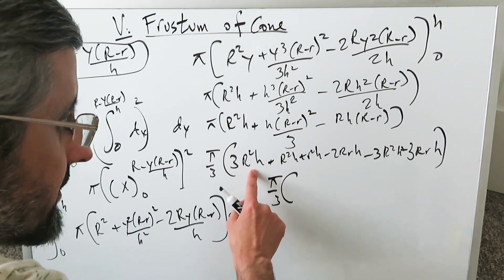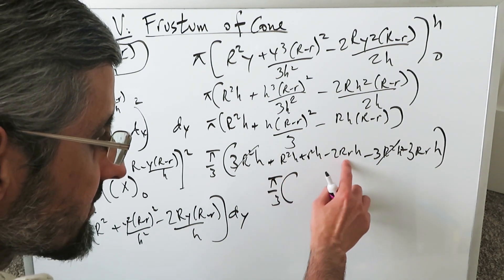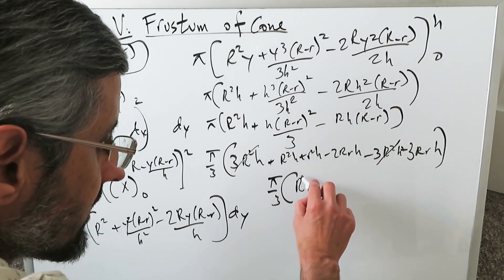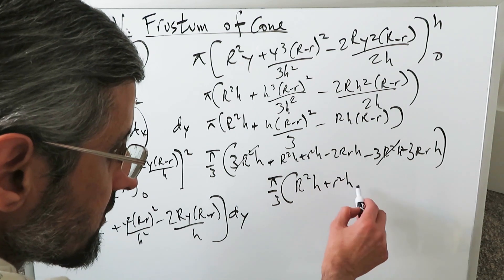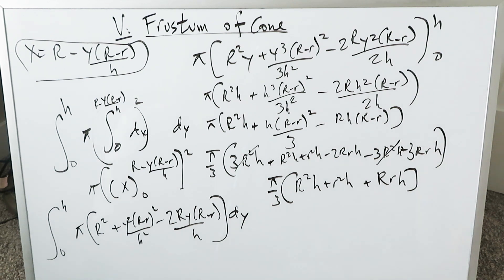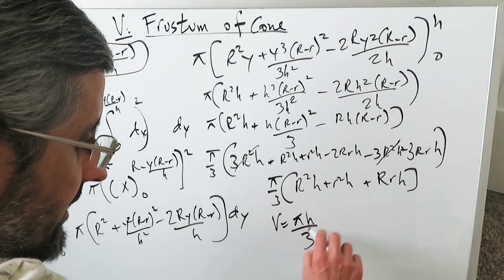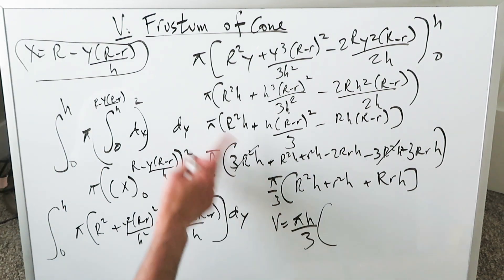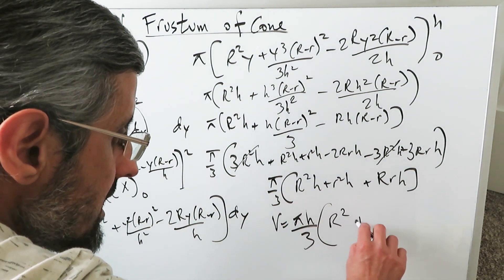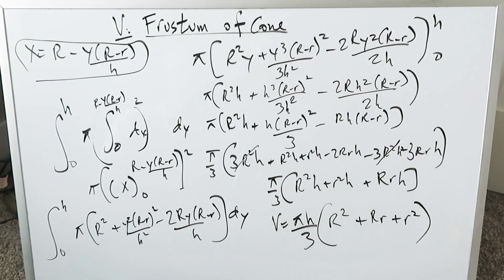I have a pi over 3. 3 r squared h minus 3 r squared h. These will cancel out. I have r squared h r squared h minus 2 r r h and that. That will be a positive r r h. I have here a capital r squared h plus r squared h with lowercase plus r r h. The last step here will involve you isolating that height and the volume will be equal to pi times height divided by 3. As you know the volume of a cone is over 3. The volume of frustum will still maintain that over 3. But here you'll have an r squared plus r r plus r squared. And that right there is the volume formula for frustum of a cone.